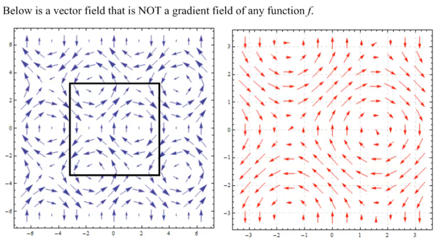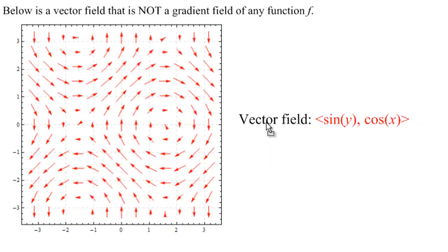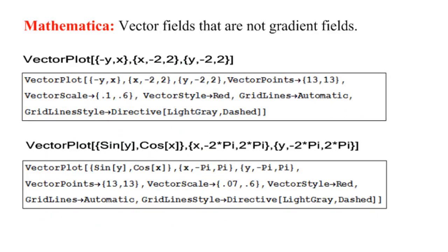This is a very cool function. This is the vector field of <sin(y), cos(x)>. And the idea is that there is no real valued function f whose partial with respect to x gives sin(y) and whose partial with respect to y gives cos(x). And we will always be able to find some kind of curl in these vector fields that are not the gradient field of any function. Here are the Mathematica commands for these two plots.